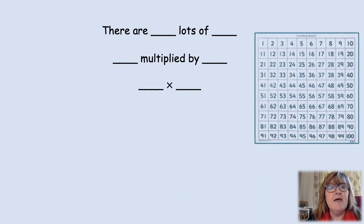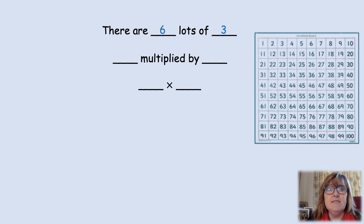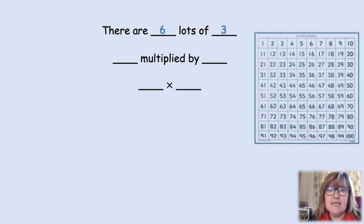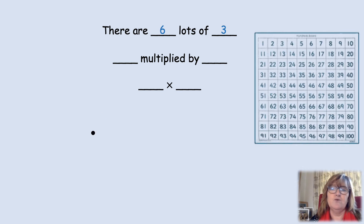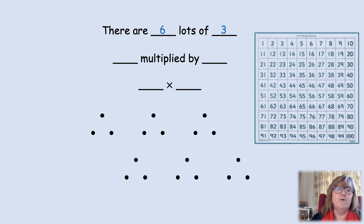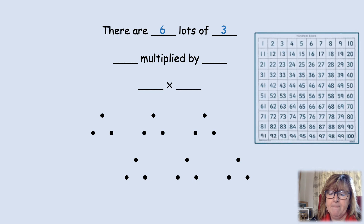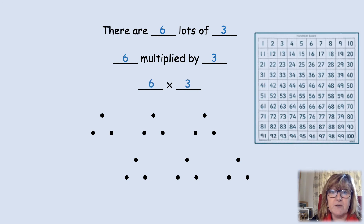Let's look at my statements. There are six lots of three. It means I've got six equal groups with three in each group. Six equal groups of three. Six lots of three. I'm going to draw those: one, two, three, four, five, six. I've drawn six groups of three. Six lots of three. That's the same as six multiplied by three. And that's the same as saying six times three. We know all those statements are true about my image.